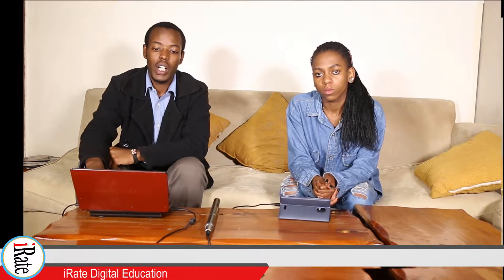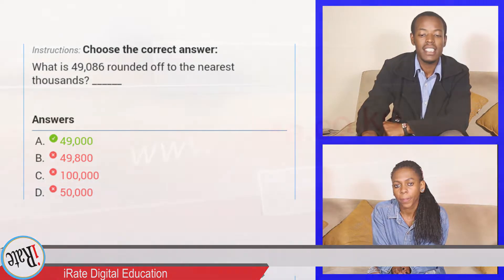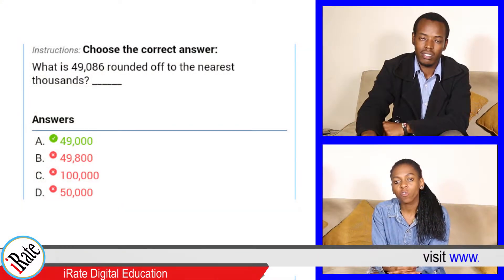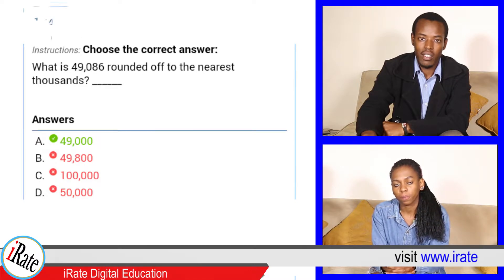Choose the correct answer. What is 49,086 rounded off to the nearest thousands? The answer is 49,000. That is correct.